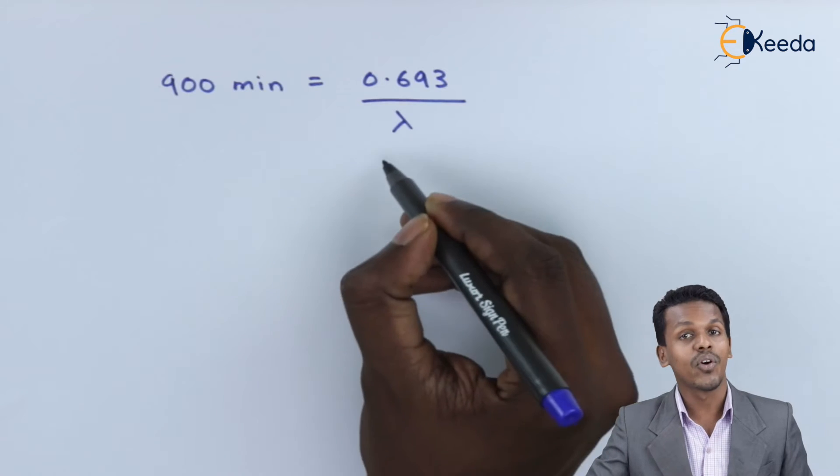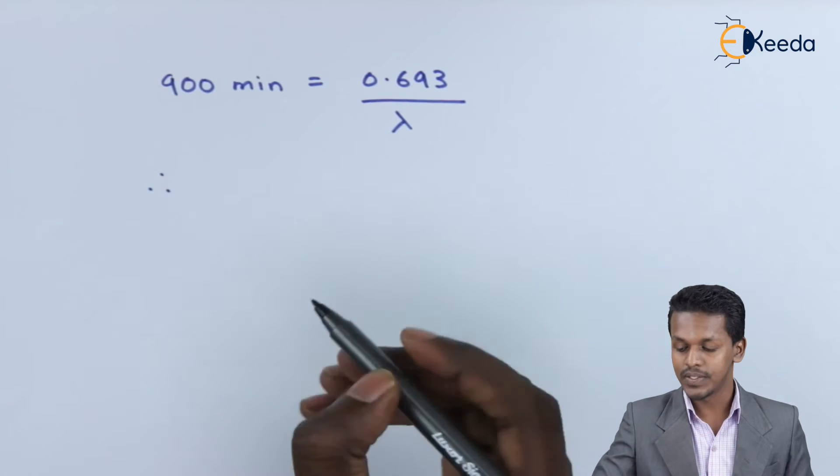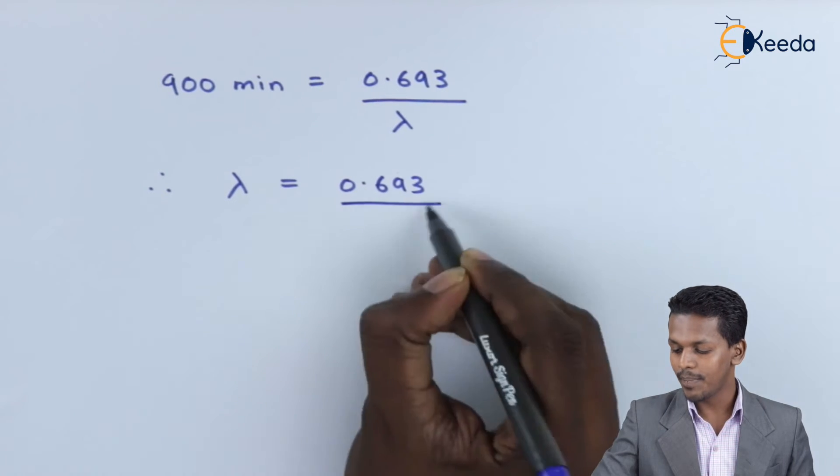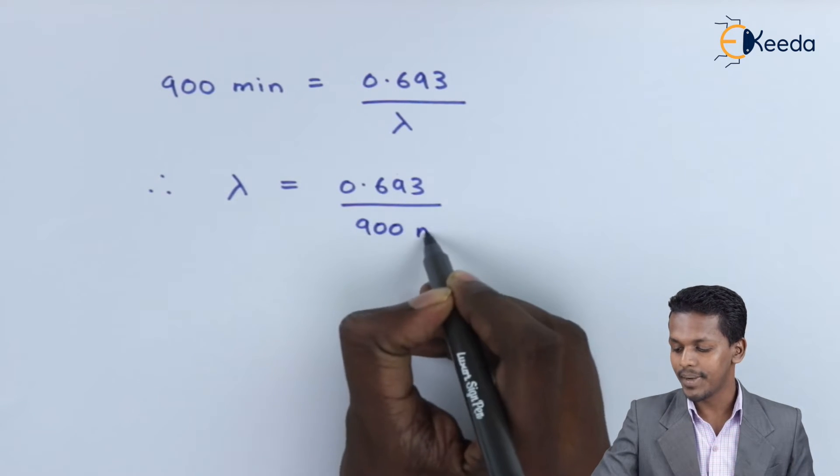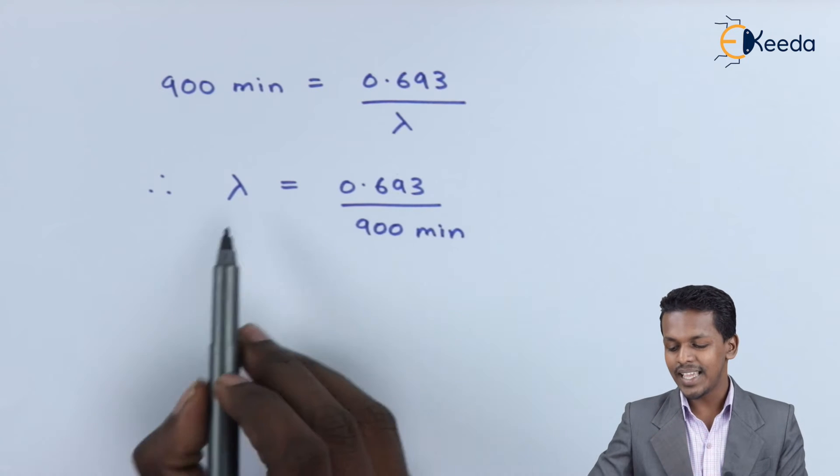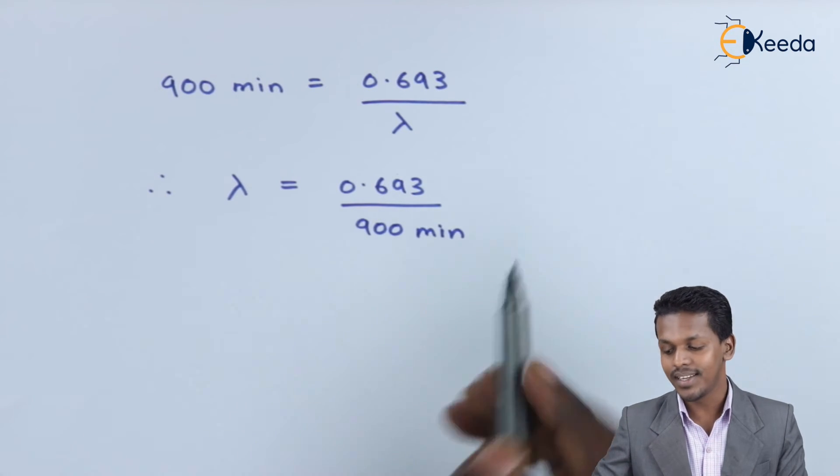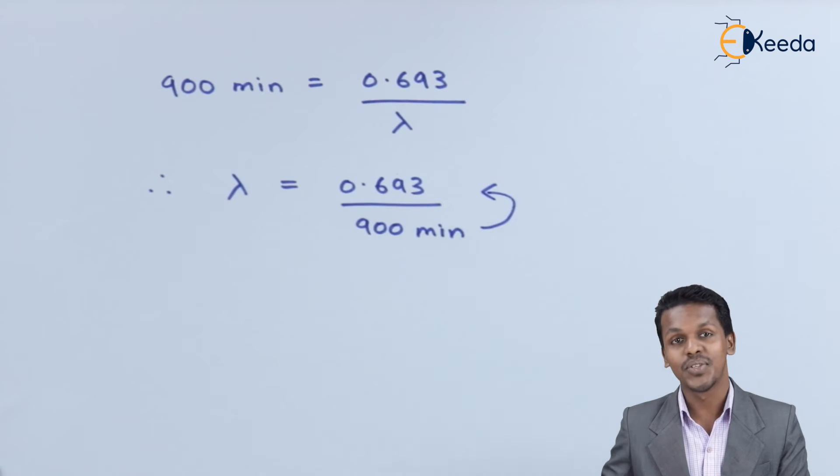We have to find the value of lambda, the decay constant. Therefore, lambda equals 0.693 divided by 900 minutes. In that case, the value of the decay constant will have a unit of minute inverse.